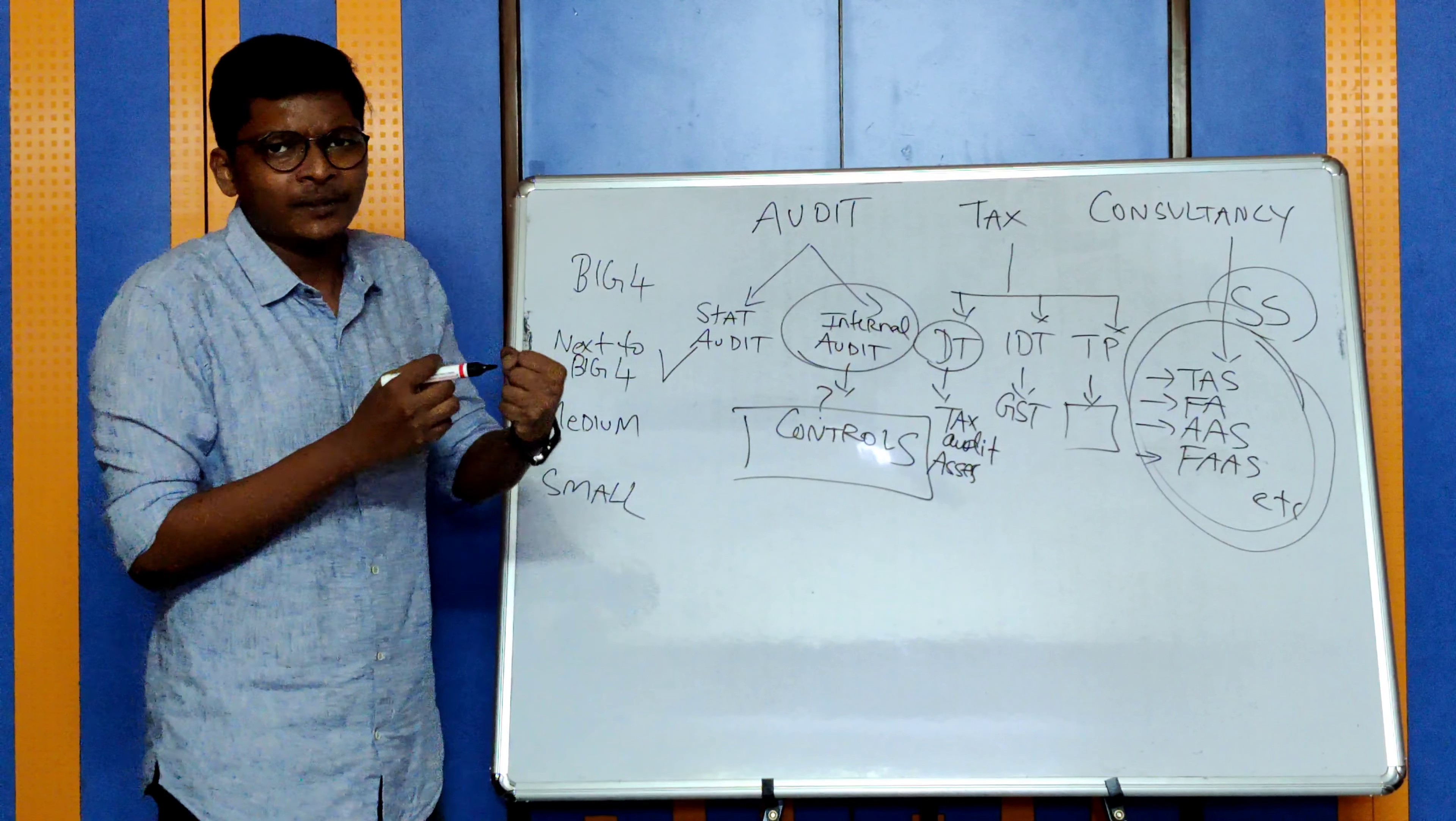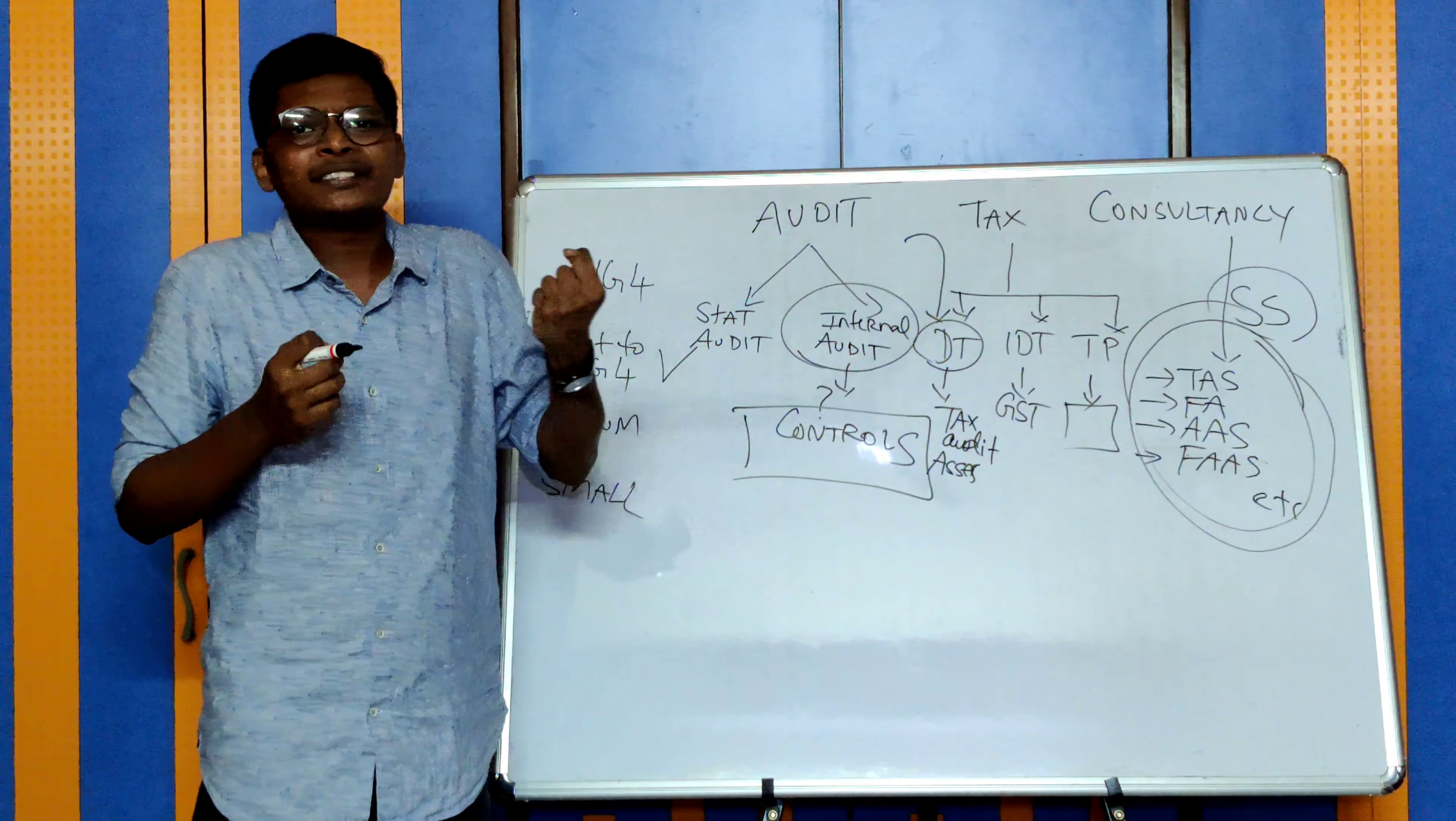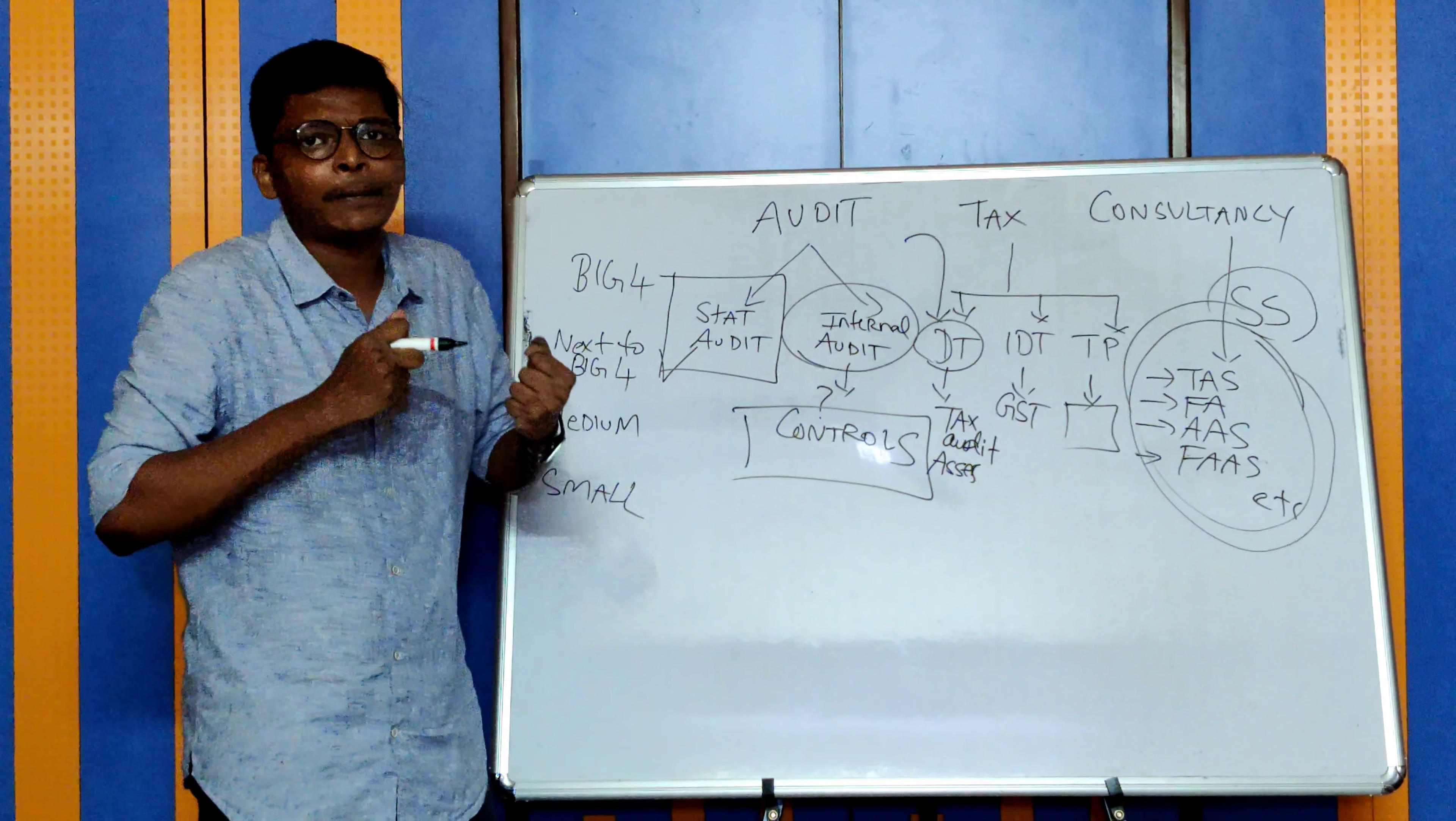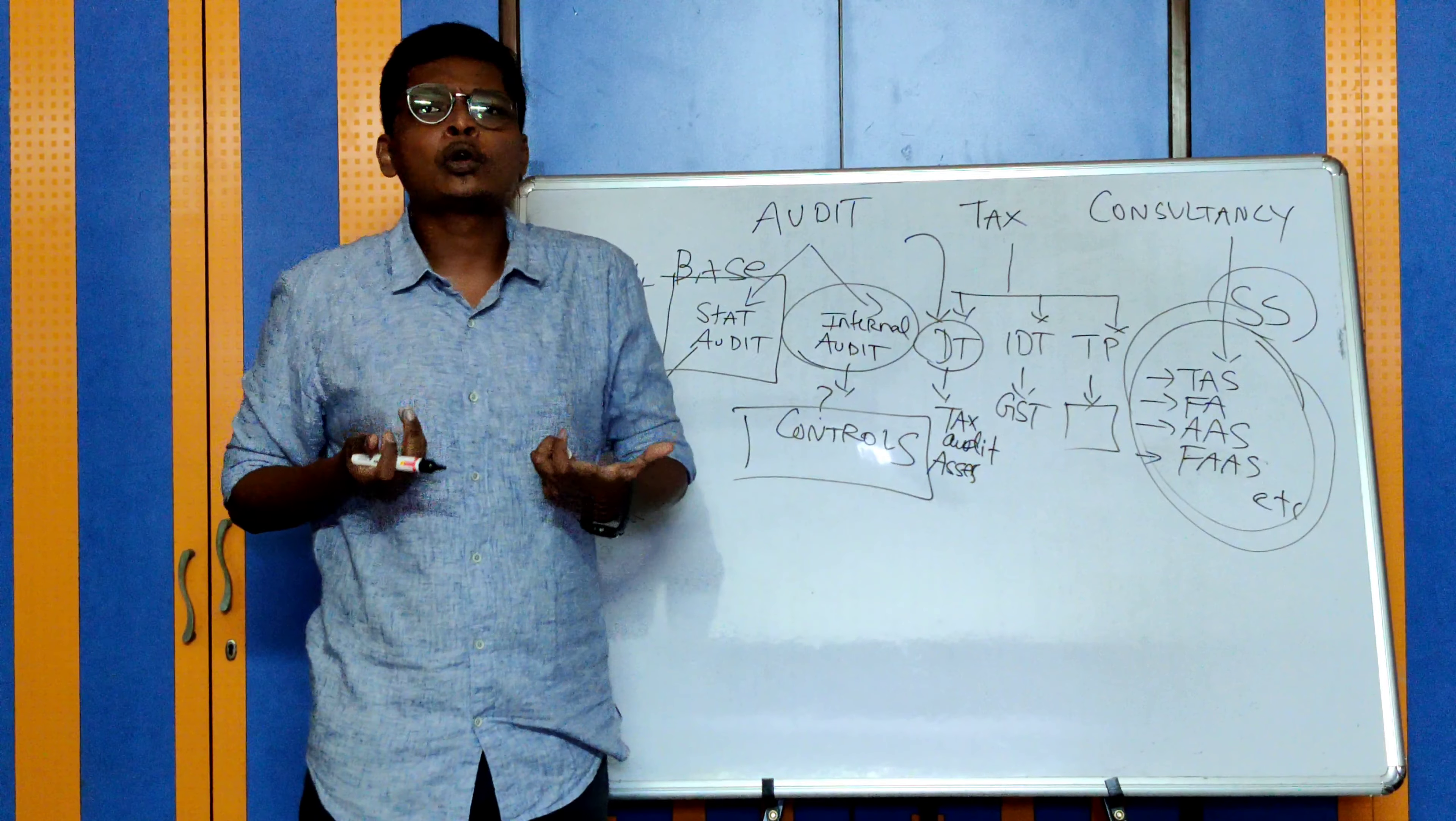What happens is students don't know all these things exist - they get whatever is offered to them. Sometimes they offer a position in direct tax, you go blindly into Big Four into direct tax, and later I've seen people regret it. So what is important is you need to understand the different service offerings and what you choose. In my view, for articleship, statutory audit is the best because from statutory audit you can jump anywhere in the future, but from other lines it's difficult to come back to audit.